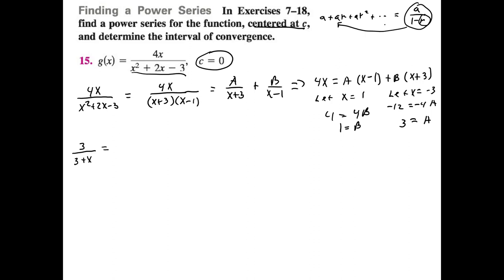We want the first term to equal 1. Since our first term is 3, we multiply numerator and denominator by 1/3. When grading homework, many of you jumped to the final stage without showing work. If I can't do it in my head, I don't expect you to either — I'll assume you copied. You need to show enough steps so it doesn't look like you looked it up online.